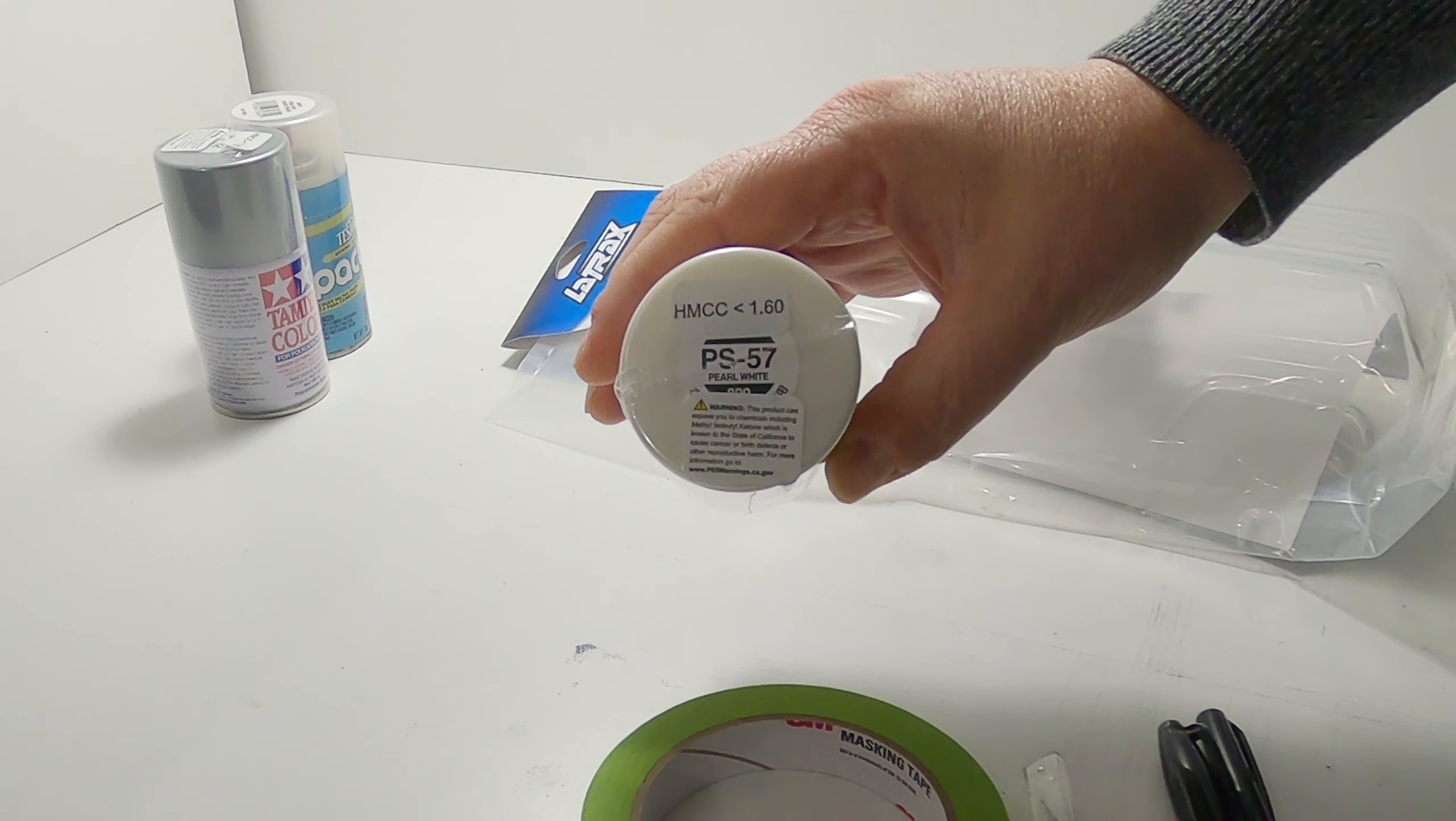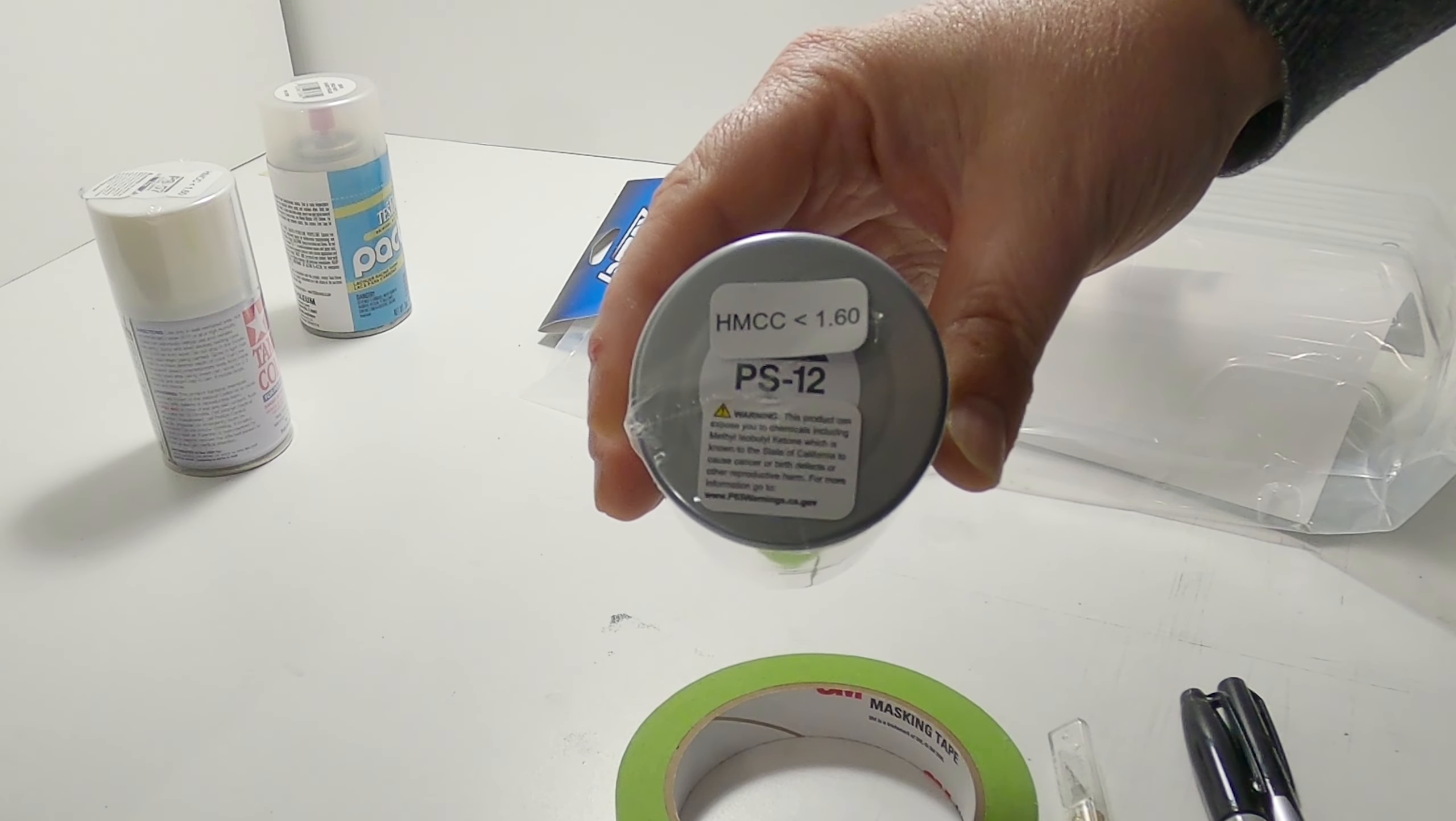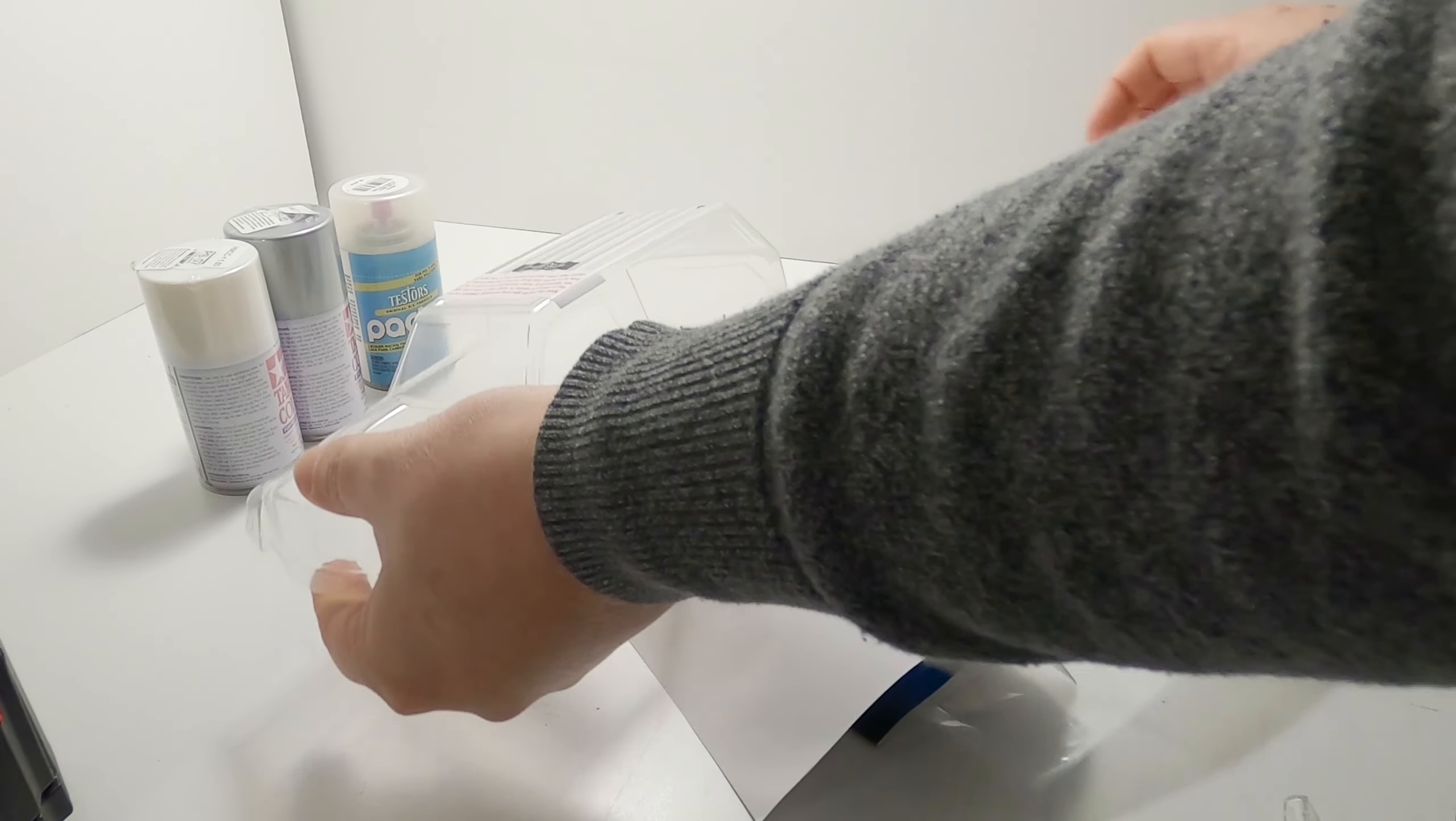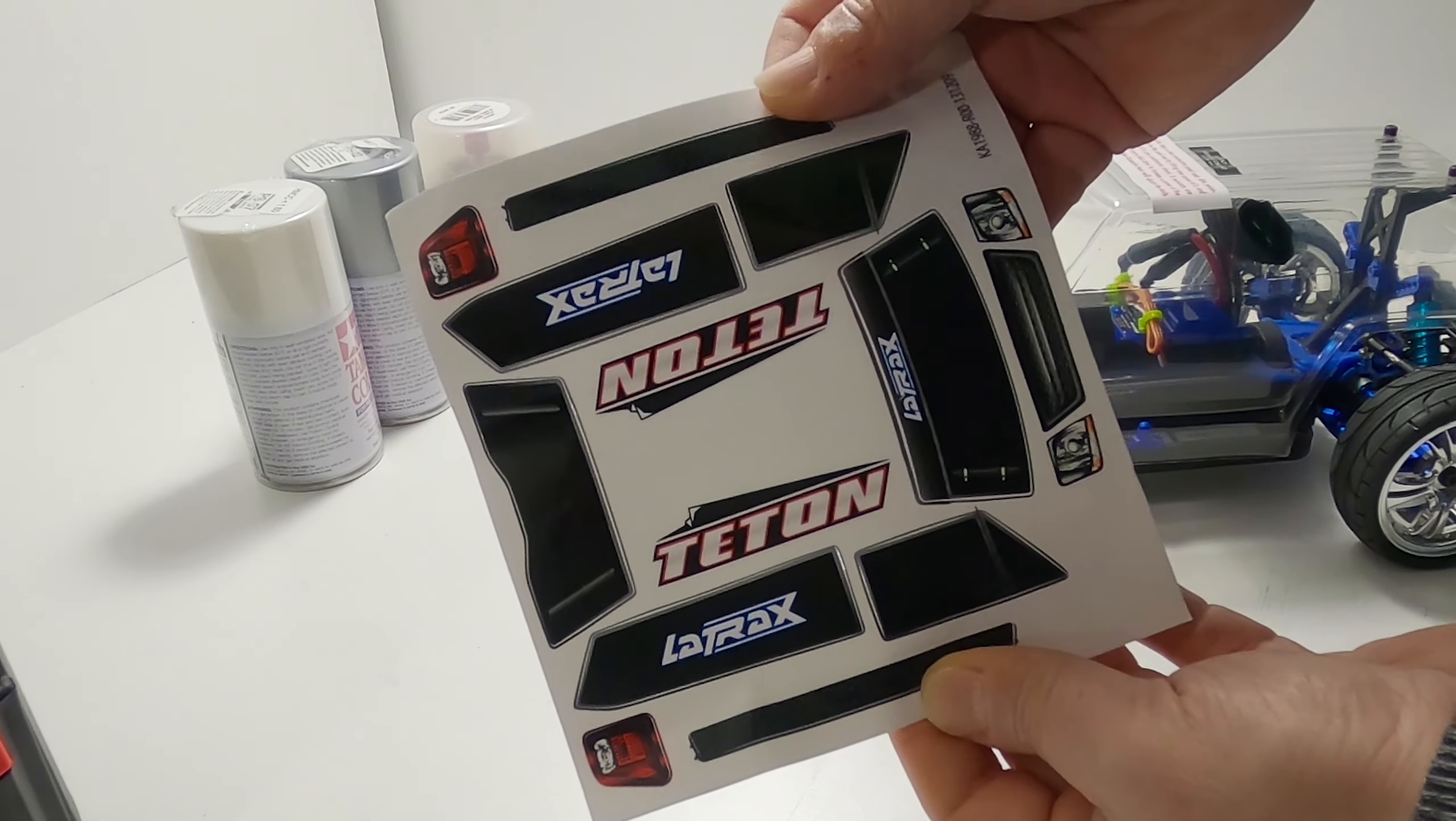If you're interested in the part numbers and ordering these colors of paint, there they are. I did not use the pearl white blanco but I packed it. There's the clear body and the stickers that come with it, all the items you'll need to complete this project.